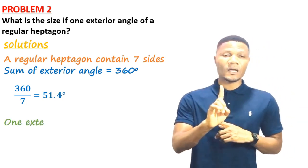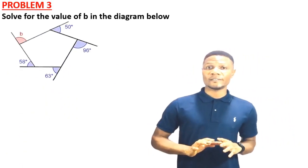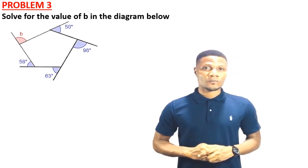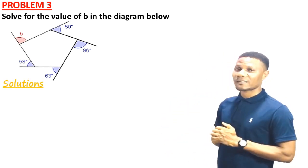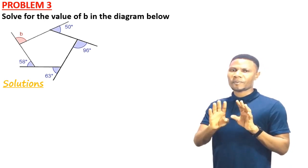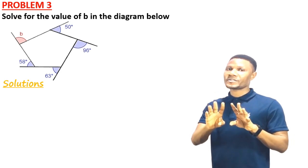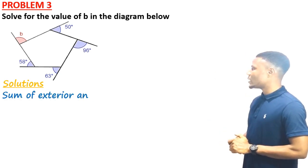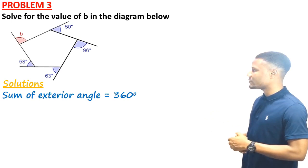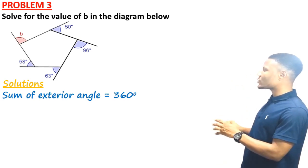Problem 3: Solve for the value of b in the diagram. Observing the diagram, it is a pentagon and all the angles are located outside — meaning they are exterior angles. Since the sum of exterior angles of a polygon equals 360°, we add all exterior angles and equate to 360°.